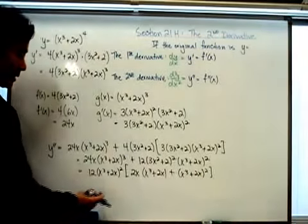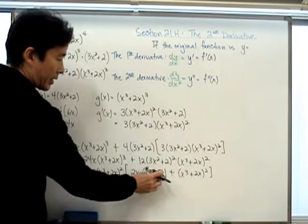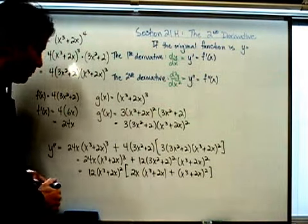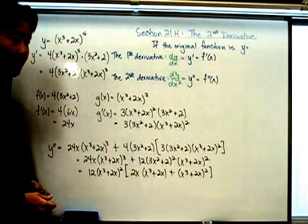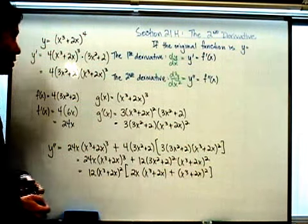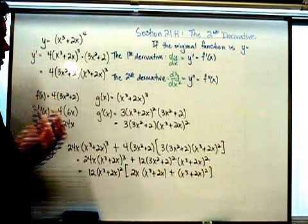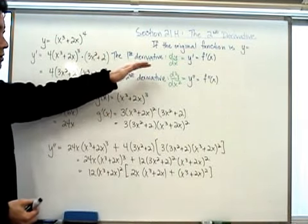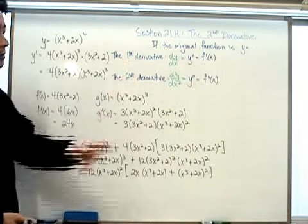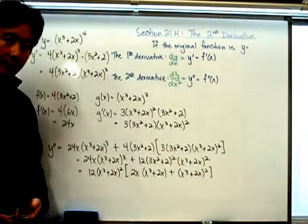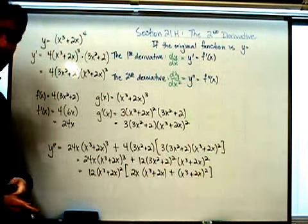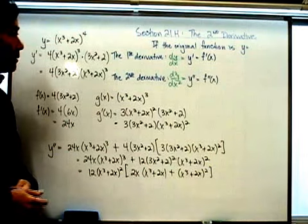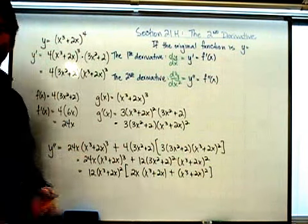From here, you could distribute the 2x and expand to get the fully simplified form of y double prime. It can get very complicated when the original function is complex, but the process is exactly the same. If you want the first derivative, use your differentiation rules. If you want the second derivative, just take the derivative of the first derivative, applying all relevant rules like the chain rule and product rule.